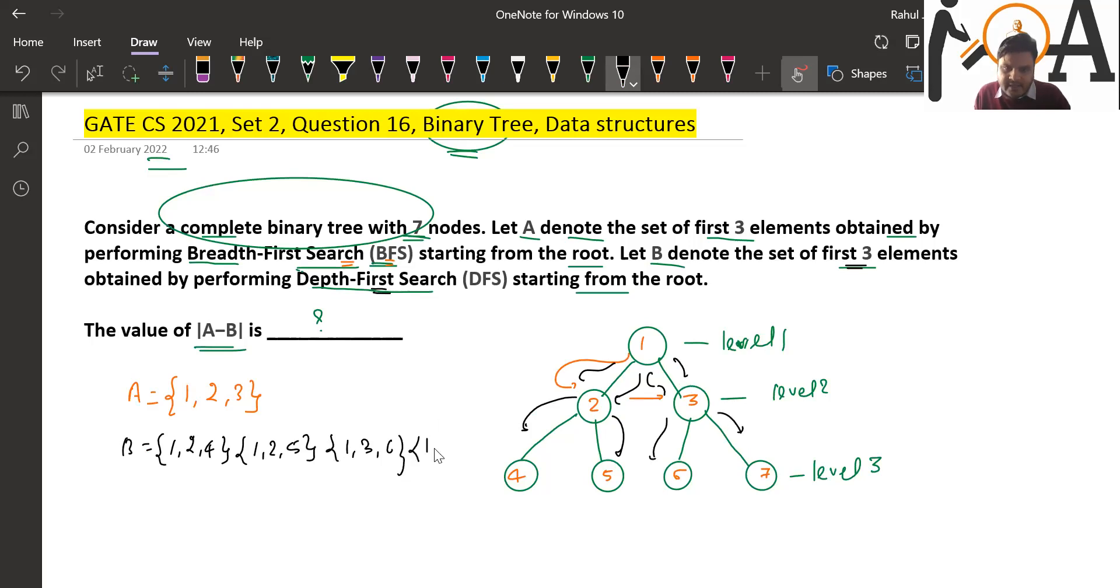And one more possibility: {1, 3, 7}. So basically these are the possibilities of getting the first 3 elements using DFS in the complete binary tree.